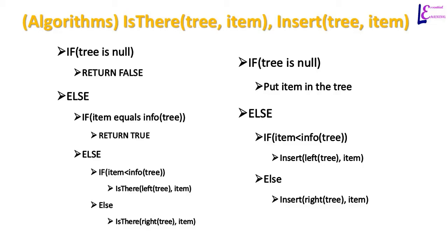To insert an item in a binary search tree, if the tree is empty, the item is inserted at the root. If not, the item is inserted to the left if it is less than the root, and the item is inserted to the right if it is greater than the root.